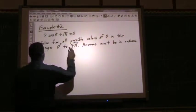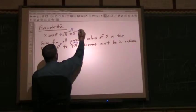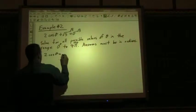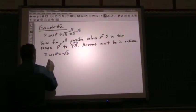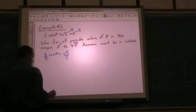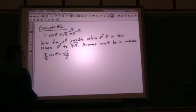So, rearranging the equation, I'm going to go minus root 3, minus root 3, end up with 2 cos theta equals negative root 3, divide both sides by 2. This cancels out. And I end up with cos theta equals negative root 3 over 2.